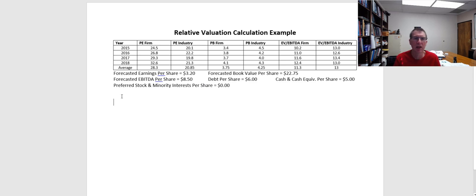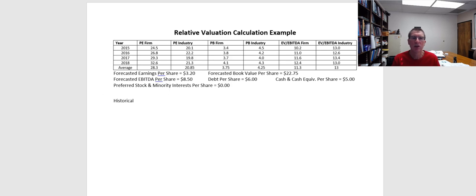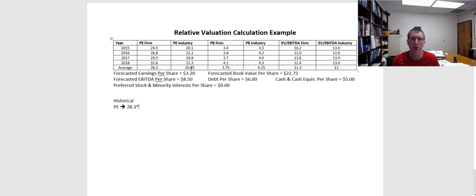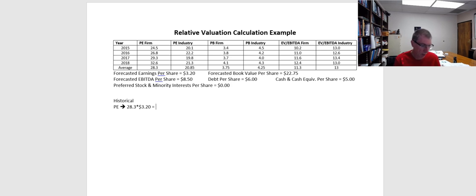Now we're going to use the historical measures to calculate what the appropriate stock price should be. For PE, we know our average is 28.3, so we're going to assume that's a fair multiple for our stock price. Our earnings per share is $3.20. So we just multiply those together and we get a value of $90.56.